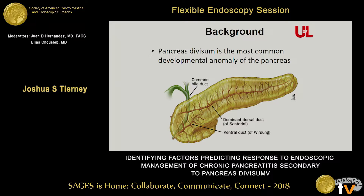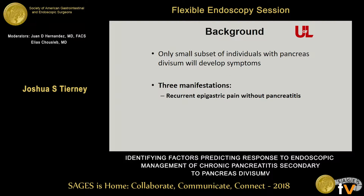Pancreas divisum is the most common developmental anomaly of the pancreas, estimated to be anywhere from 5% of the population. There's only a small subset of those individuals with pancreas divisum who will eventually go on to develop symptoms, and there are three sort of manifestations of symptomatic pancreas divisum.